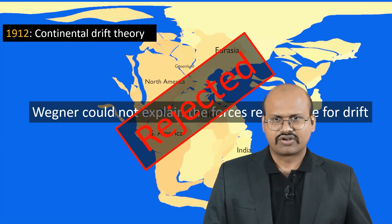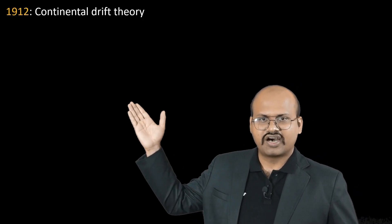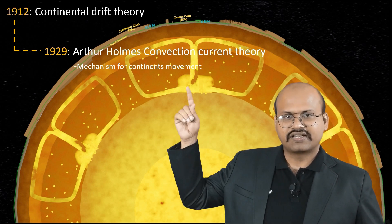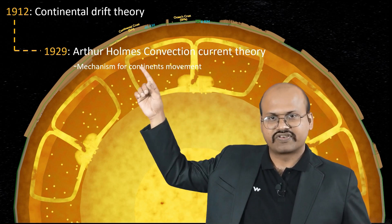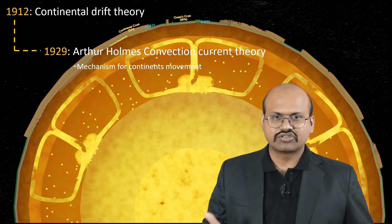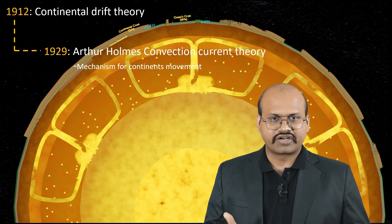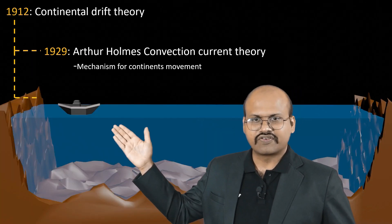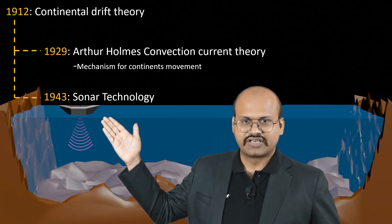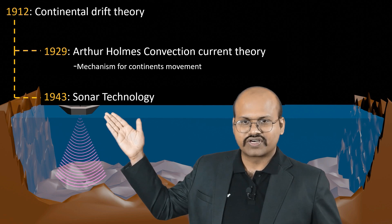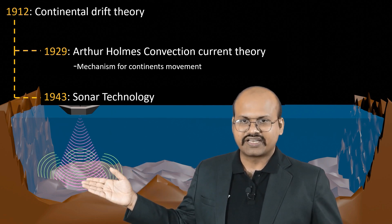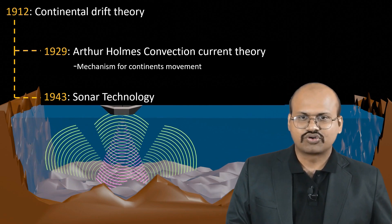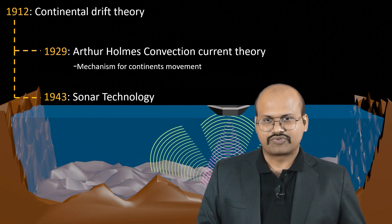In 1929, Arthur Holmes came up with convection current theory, where he explained that there lies a convection current within the mantle, and it is because of this convection current that the continents move. Further, in 1943 we got sonar technology, in which sound beams are sent towards the sea floor and the time it takes for these beams to come back to the ship is calculated, through which we can determine the depth of the sea floor.